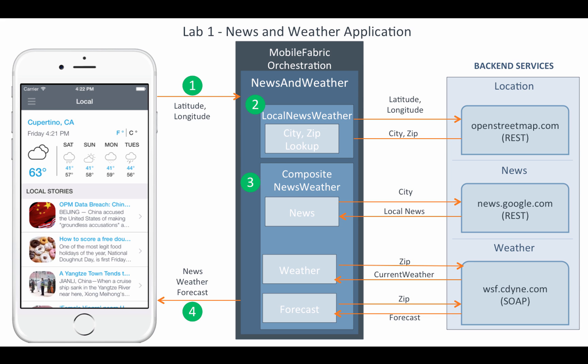This application displays news based on categories like world, US, et cetera, and also displays local news and the current weather along with the weather forecast for an input city and zip code. This is done by invoking third-party SOAP and REST services of C-Dyn and Google. Mobile Fabric provides integration and orchestration services invoked by the Cordova client application. These services return optimized data needed for the invoking applications, reducing development effort required for front-end applications. The orchestration service invokes multiple back-end services and returns optimized data to the invoking application.